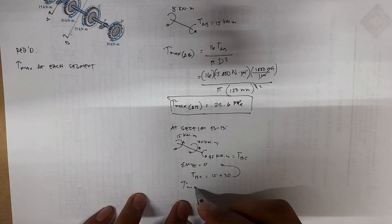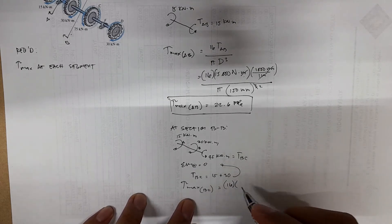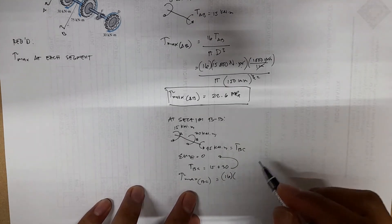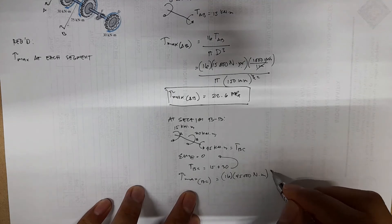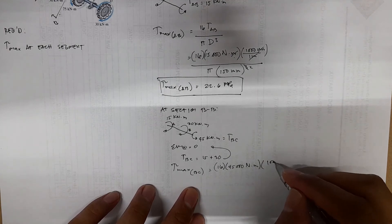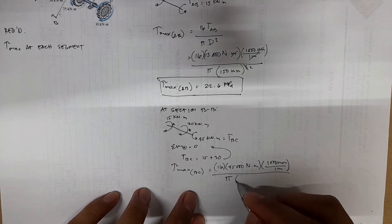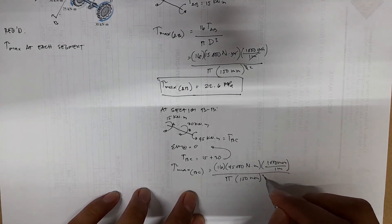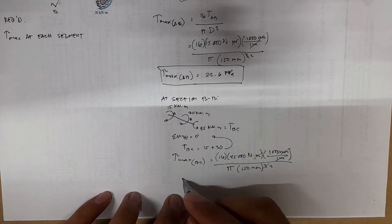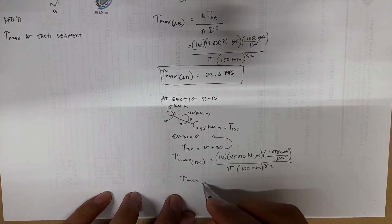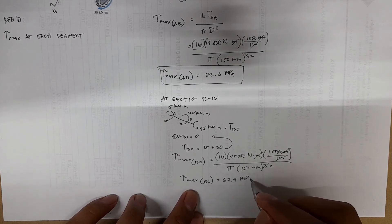The stress max at B-C equals 16 times 45,000 N·m times the conversion factor divided by pi times (150 mm)³. After cancellations, stress max B-C equals 67.9 MPa.